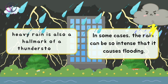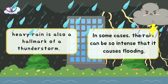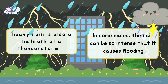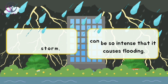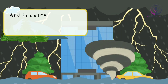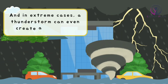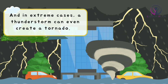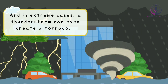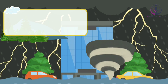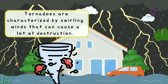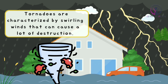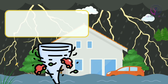In some cases, the rain can be so intense that it causes flooding. And in extreme cases, a thunderstorm can even create a tornado. Tornadoes are characterized by swirling winds that can cause a lot of destruction.